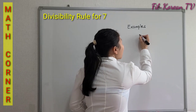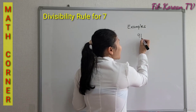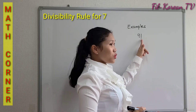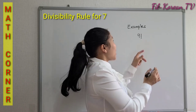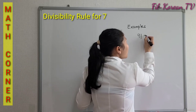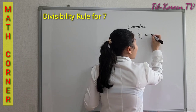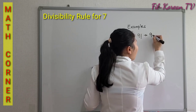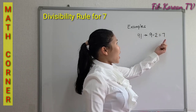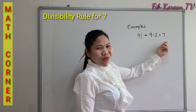The first example is 91. The last digit is 1. According to the rule, we double the last digit — if we double 1 it will become 2 — and then we subtract it from the remaining number, which is 9. Nine minus two equals seven, and the answer is seven, which is a multiple of seven.